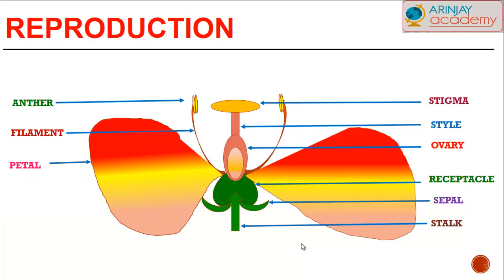A general structure of the flower shows you the female portion — the stigma, style, and ovary — and the male portion — the anther and the filament. The petal is to attract insects or any pollinating agent. The receptacle houses the portions of the flower to hold it up, whereas the sepals are outgrowths that protect it, and naturally the stalk attaches it to the stem of the plant.